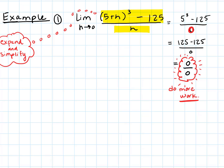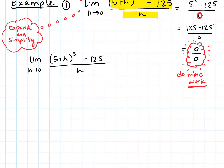Try direct substitution first — sometimes it works and you're done. Here it doesn't, so we keep going. Let's rewrite the limit of (5+h)³ - 125 over h as h goes to zero and carry the limit notation throughout. I have not calculated the limit yet — I'm just doing algebra, so the limit notation must stay.